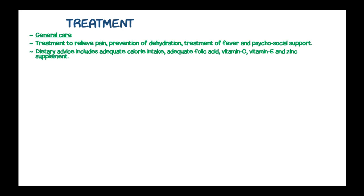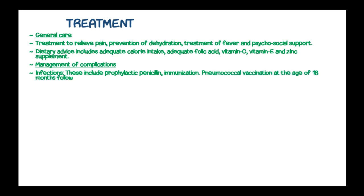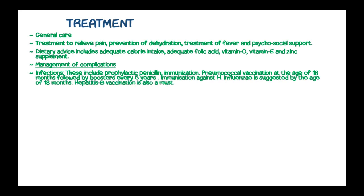Treatment of sickle cell disease can be divided into general care, which includes relieving pain, prevention of dehydration, treating fever, and providing psychosocial support. Dietary advice is important, including adequate intake of calories, folic acid, vitamin C, vitamin E, and zinc supplements. Complications such as infections are managed including prophylactic penicillin. Immunizations include pneumococcal vaccination at 18 months with boosters every 5 years, and immunization against H. influenzae is suggested by 18 months.